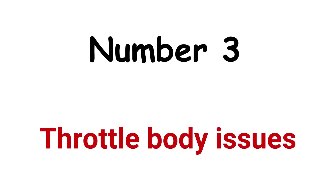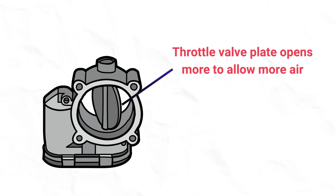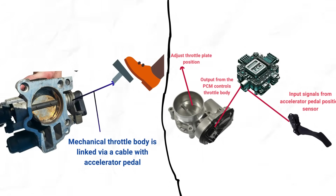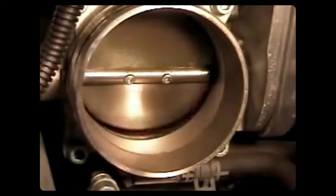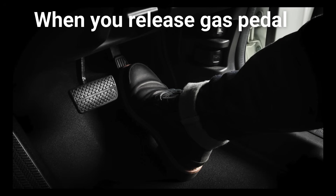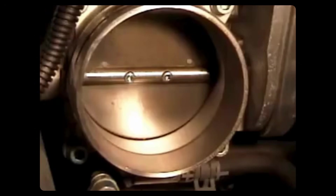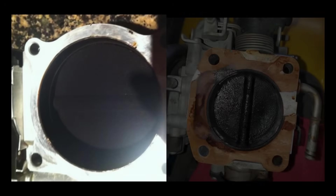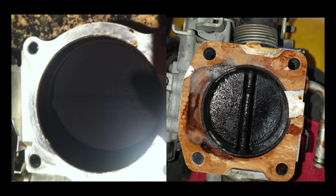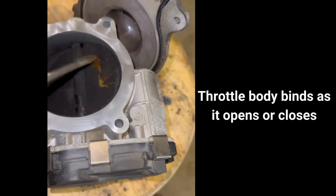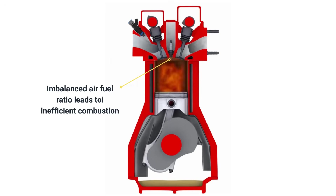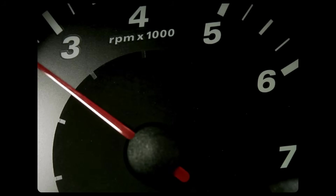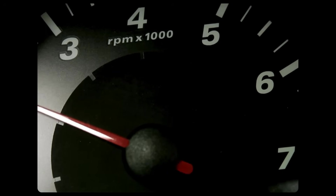Cause #3: Throttle body issues. The throttle body has a butterfly valve that opens or closes in response to how much you press the gas pedal, affecting how much air enters the engine. At idle, when you completely release the gas pedal, the throttle valve is almost closed. But if the throttle body is clogged with sticky carbon deposits, the throttle valve may experience a slight bind as it opens or closes, causing it to remain more open than intended — disrupting the optimal air-fuel ratio and leading to RPM fluctuations at idle.